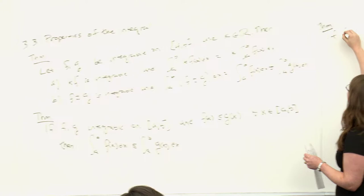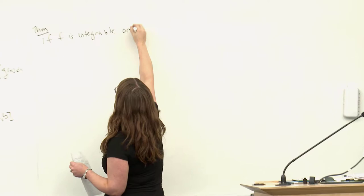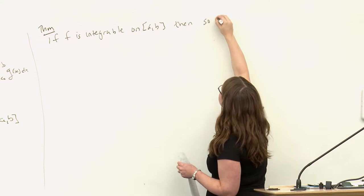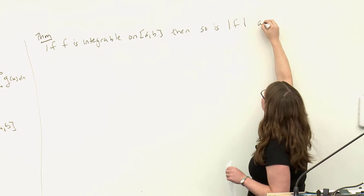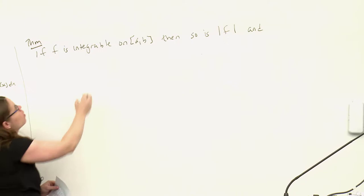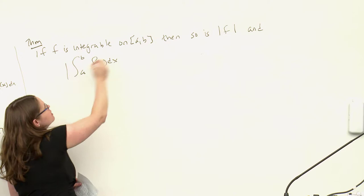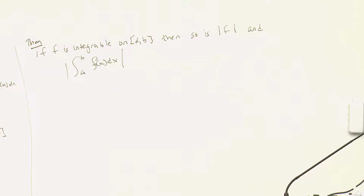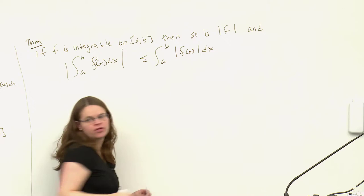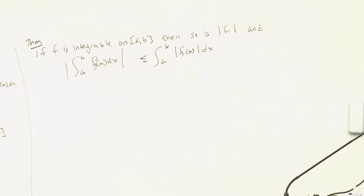Another result: if f is integrable on [a,b], then so is its absolute value |f|. Moreover, we get a comparison result - if we integrate f and take the absolute value of the result, f could be positive or negative so you get some cancellation, which means it will be smaller than what you get integrating |f| directly, where all those areas add up.